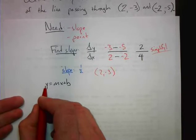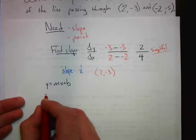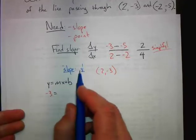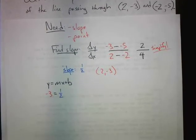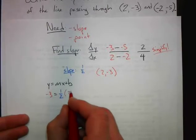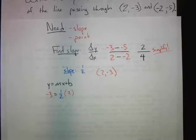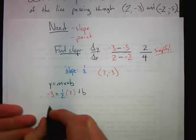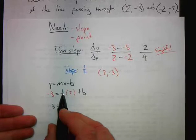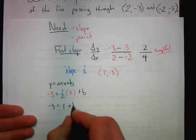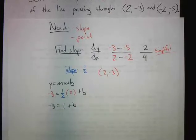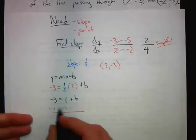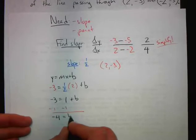We know that y comes from our y-coordinate: negative 3. We know m is the slope: 1/2. We know x comes from the x-coordinate: 2. All we need to do is use that information to find b. So we start crunching numbers: negative 3 equals 1/2 times 2 is 1 plus b. To solve for b, we subtract 1 on both sides, and we discover that b equals negative 4.